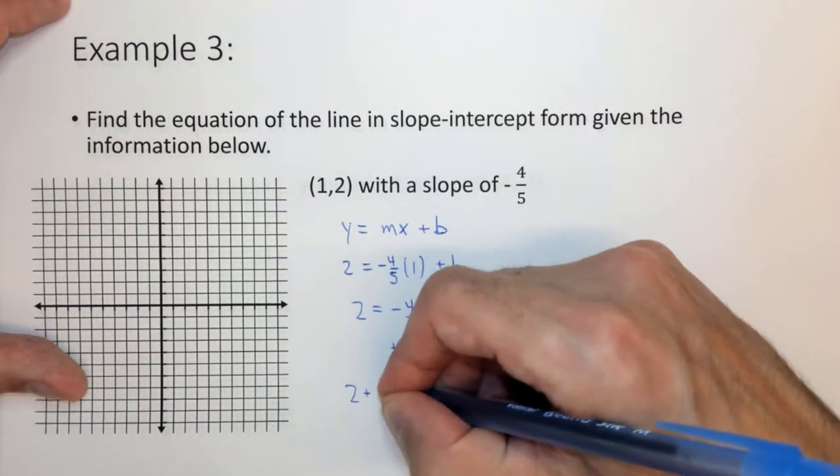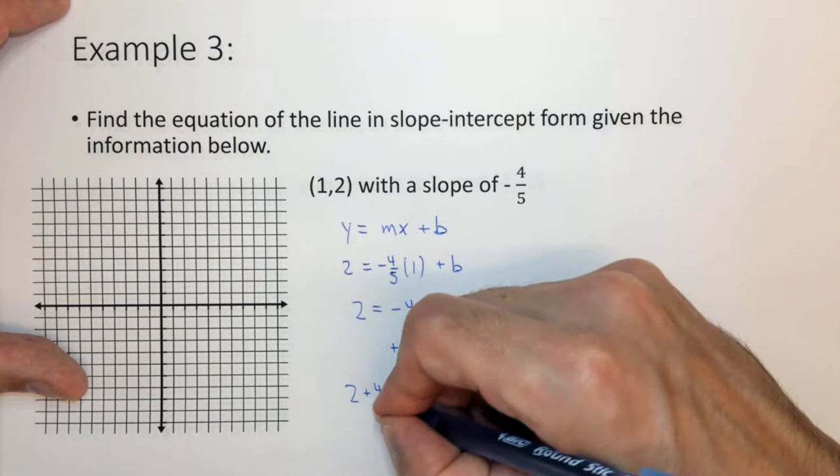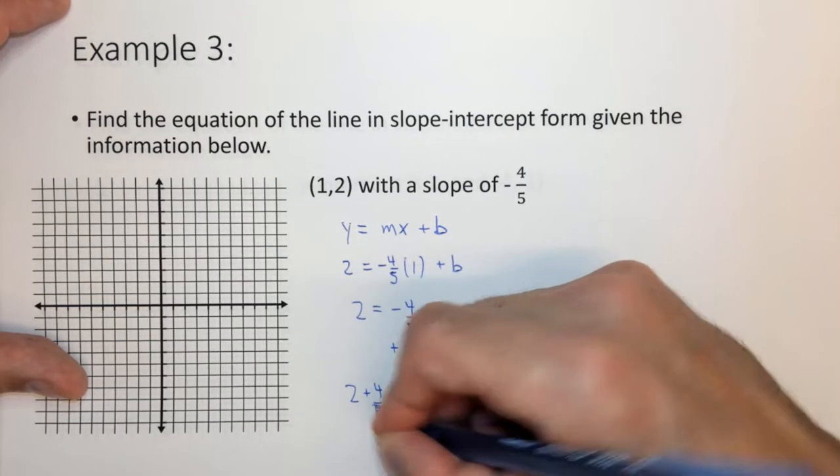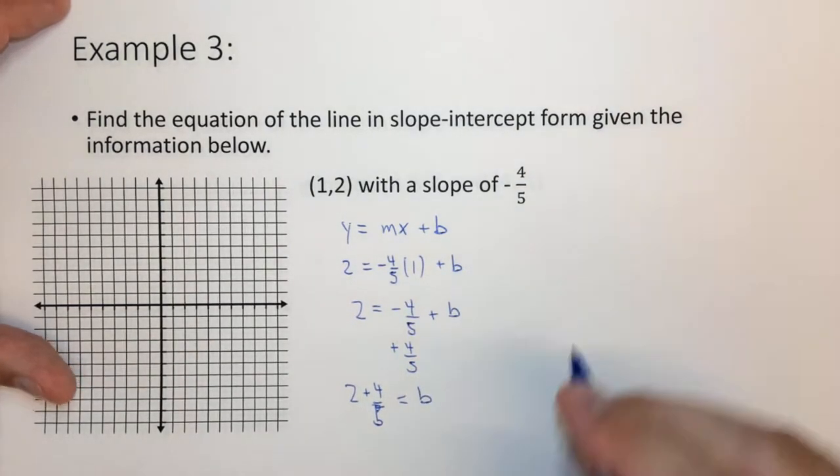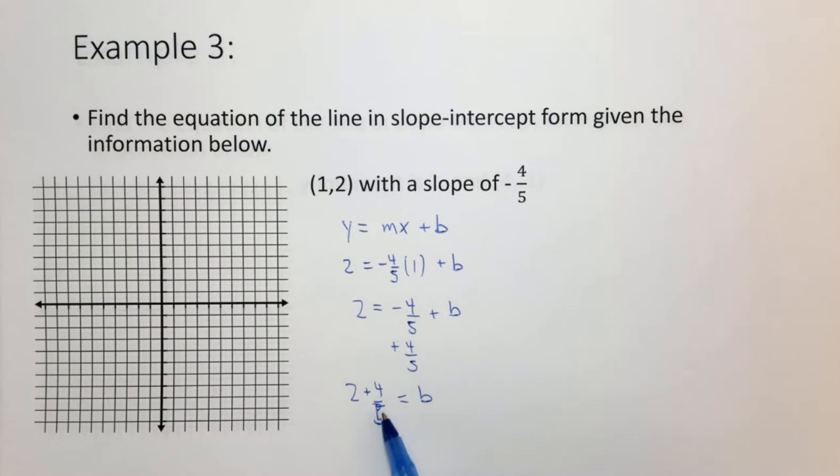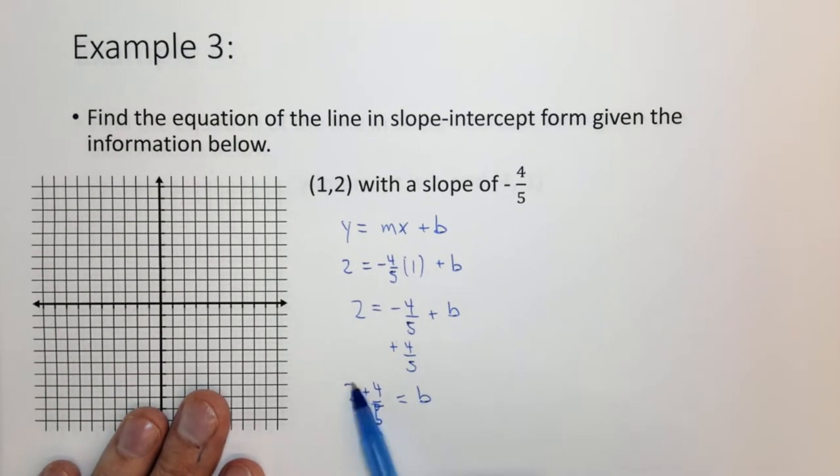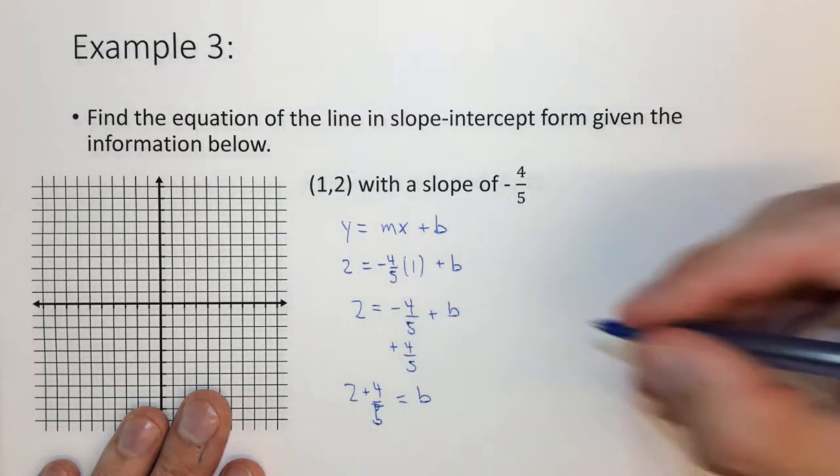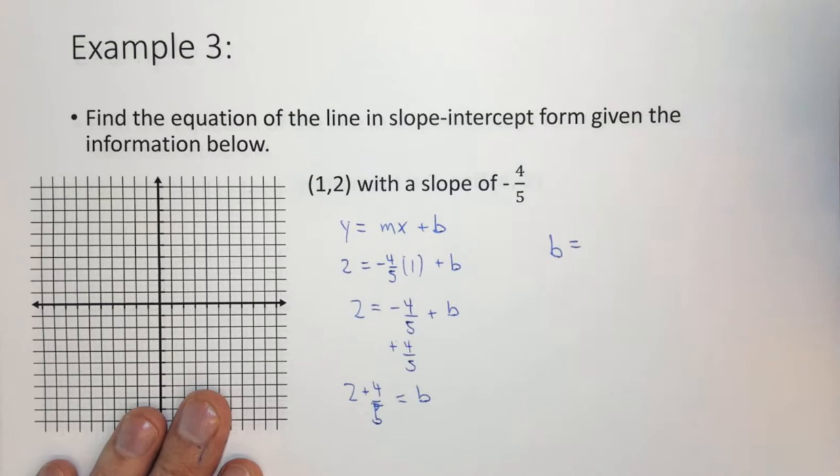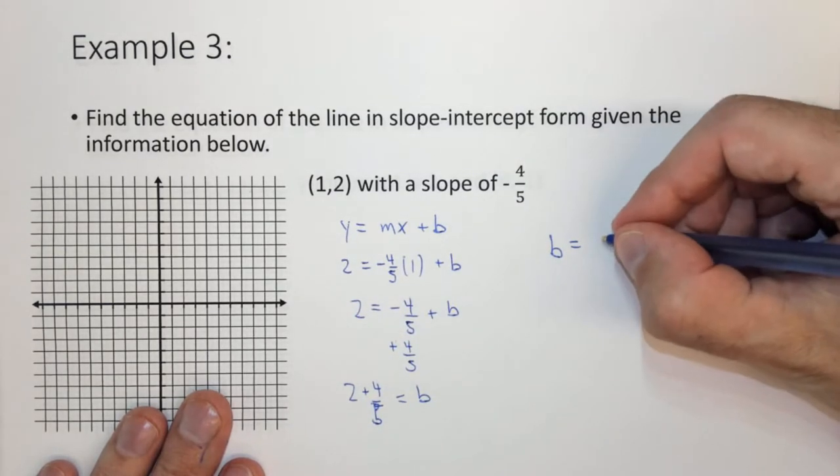We need to then add 4 fifths to both sides in order to get it to cancel out. So we have 2 plus 4 fifths equals b. Now since this is, you can't directly add this, we need to get a common denominator.